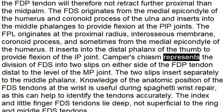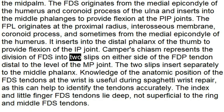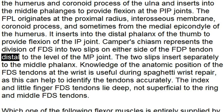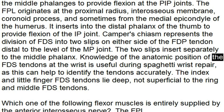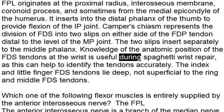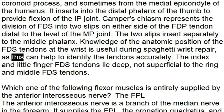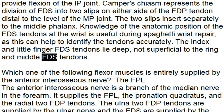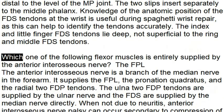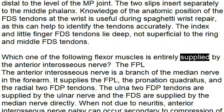Camper's chiasm represents the division of the FDS into two slips on either side of the FDP tendon distal to the level of the MP joint. The two slips insert separately to the middle phalanx. Knowledge of the anatomic position of the FDS tendons at the wrist is useful during spaghetti wrist repair, as this can help to identify the tendons accurately. The index and little finger FDS tendons lie deep, not superficial, to the ring and middle FDS tendons.